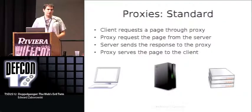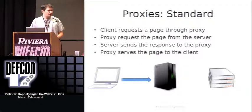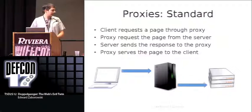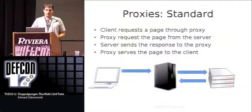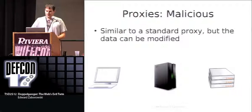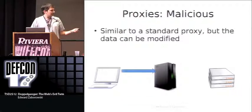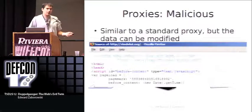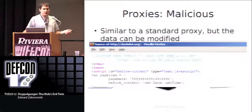A quick simplistic rundown of how proxies work: you have the client that requests a page through a proxy, and that proxy then requests it from the server. The server passes that page back to the proxy and from the proxy to the client, rendering the page. A malicious proxy isn't much different — it still sends the request through the proxy to the server and back. The only difference is the proxy now has a chance to modify this data.